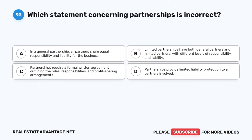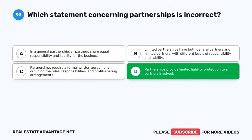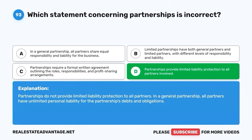Question 93. Which statement concerning partnerships is incorrect? A. In a general partnership, all partners share equal responsibility and liability for the business. B. Limited partnerships have both general partners and limited partners, with different levels of responsibility and liability. C. Partnerships require a formal written agreement outlining the roles, responsibilities, and profit-sharing arrangements. D. Partnerships provide limited liability protection to all partners involved. The correct answer is D: Partnerships provide limited liability protection to all partners involved. In fact, partnerships do not provide limited liability protection to all partners. In a general partnership, all partners have unlimited personal liability for the partnership's debts and obligations.